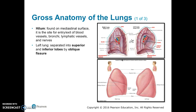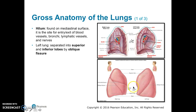The left lung is separated into the superior and inferior lobes by an oblique fissure. The left lung is smaller than the right because of the heart's position. The cardiac notch is the concavity for the heart to fit into the left lung.